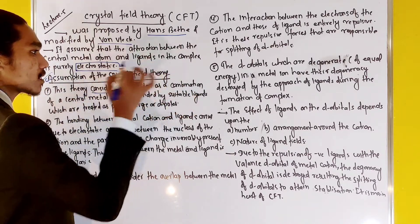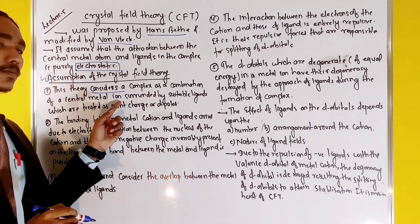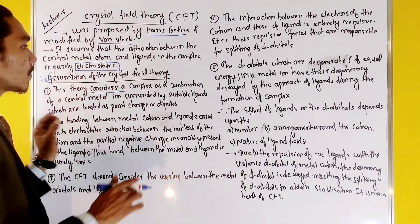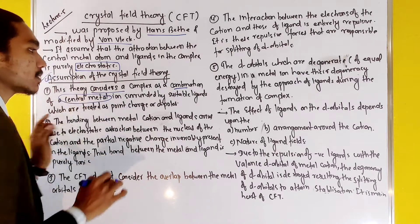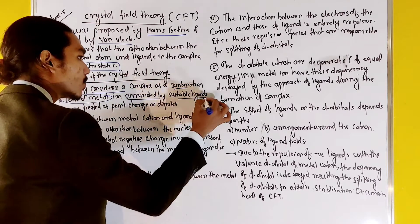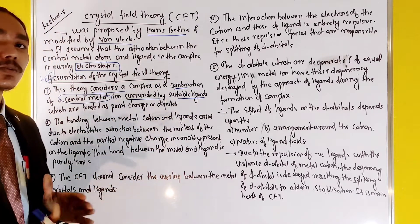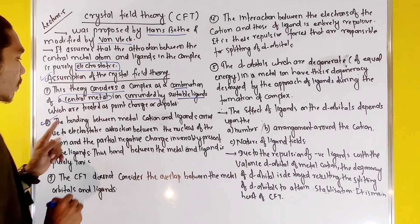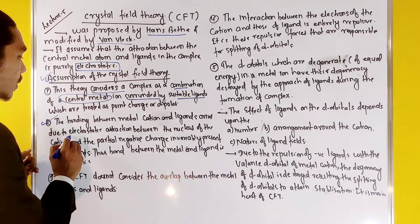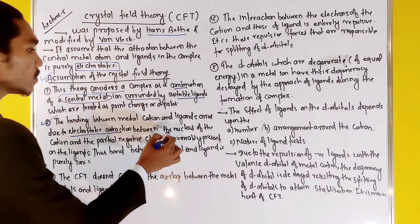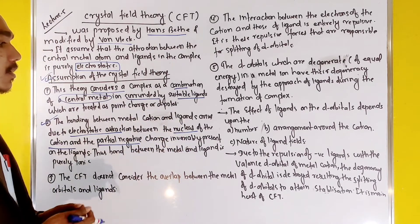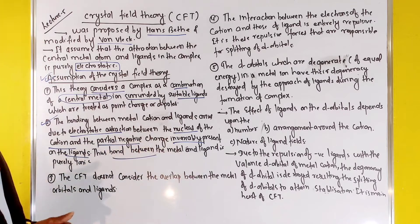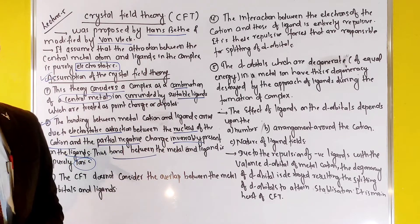This theory considers a complex as a combination of a central metal atom and ions. Ligands surround the central metal and are treated as point charges. The bonding between the metal cations and the ligands arises due to electrostatic attraction between the nucleus of the cation and the partial negative charge of the ligands. The bond between the metal and the ligands is purely ionic.